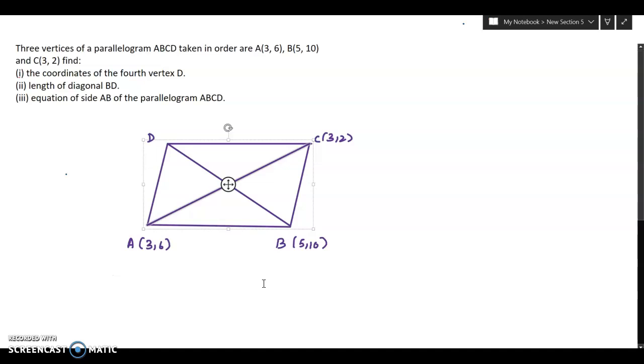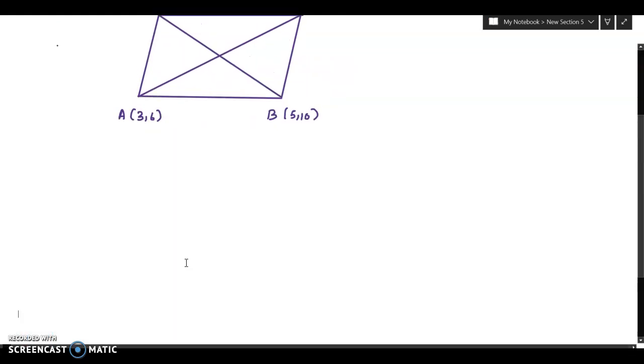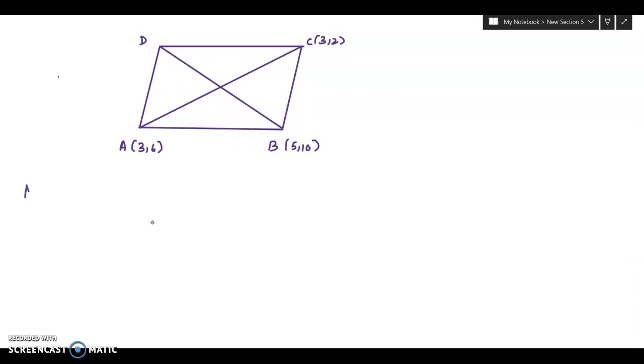Now the first part is to find the coordinates of the fourth vertex D. You have to find out the midpoint of AC. Midpoint of AC will be coordinates of O. Finding out value of X, this will be 3 plus 3 divided by 2, that is 6 by 2 which is 3. And Y will be 6 plus 2 divided by 2, that is 8 by 2, equal to 4. So the coordinates are 3 comma 4.